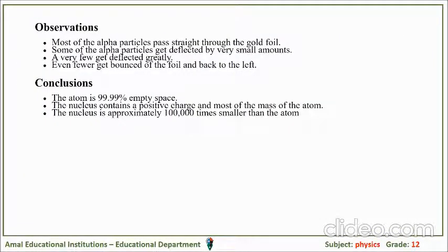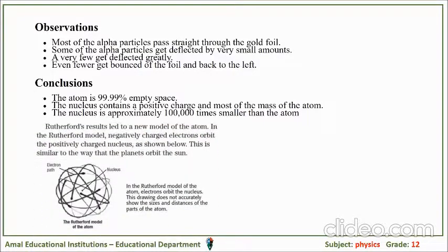He observed that most alpha particles pass straight through the gold foil, some get deflected by very small angles, a very few get deflected greatly, and even fewer get bounced back. When bounced back, they must have hit a large object. Conclusion: the atom is almost empty — 99.99% is empty. The nucleus contains a positive charge and most of the mass of the atom. The nucleus is approximately 10,000 to 100,000 times smaller than the atom.